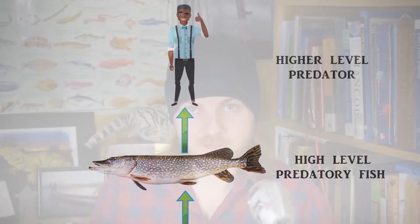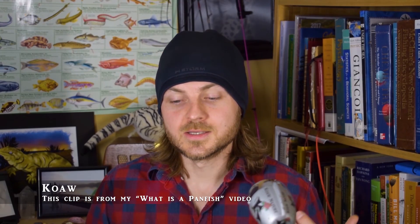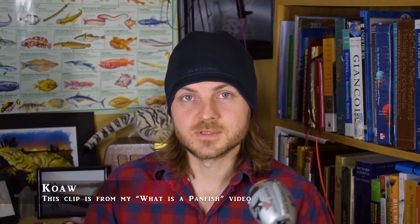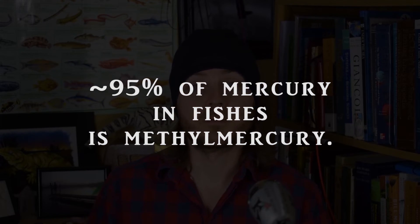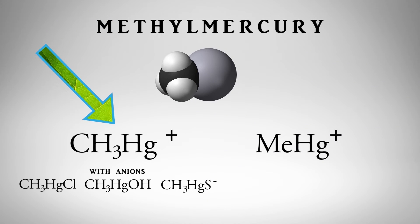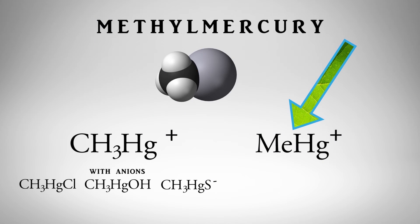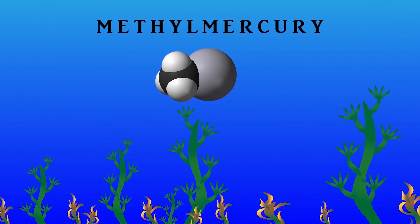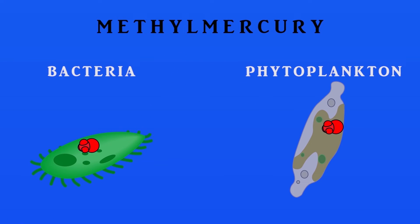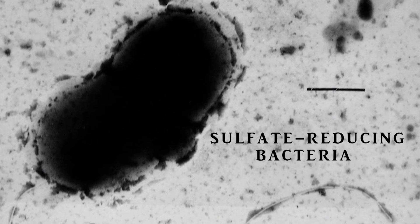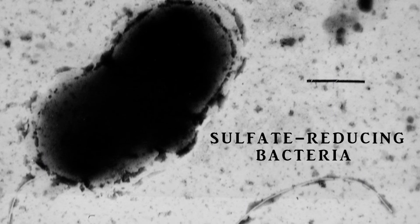There are many species types of mercury, but I will continue talking about this organic mercury, methylmercury, because 95% of the mercury within fishes is methylmercury. The first step of mercury entering the food chain begins with its absorption by bacteria or phytoplankton, or even being methylated by sulfate-reducing bacteria.